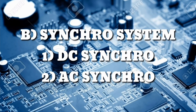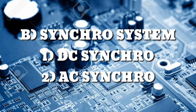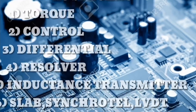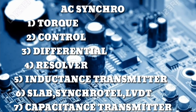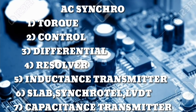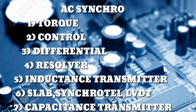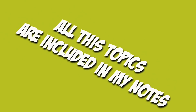The next part is the synchro system, which includes DC synchro system called DESYN and AC synchro system called the synchro system. In the AC synchro system, we have torque synchro, control synchro, differential synchro, and resolver synchro. We also have inductance transmitter, slab synchro, synchro tel, LVDT, and capacitance transmitters. All these topics are included in my notes, so go check it out.